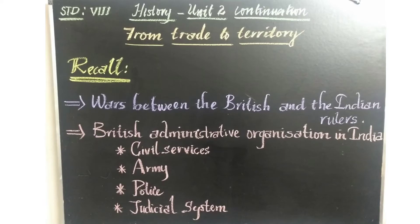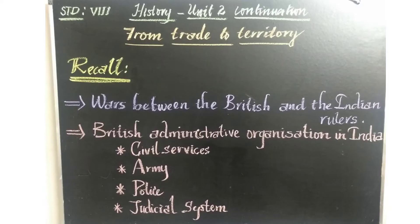Then the British administration organisation in India — we learnt in the previous class there are 4 important institutions in their hands: civil service, army, police, and the judicial system. For recruiting people, they conducted civil service examinations. For protecting themselves, they kept a very well-trained, disciplined army. To give protection to people and their factories, they had a good police system introduced by Lord Cornwallis.